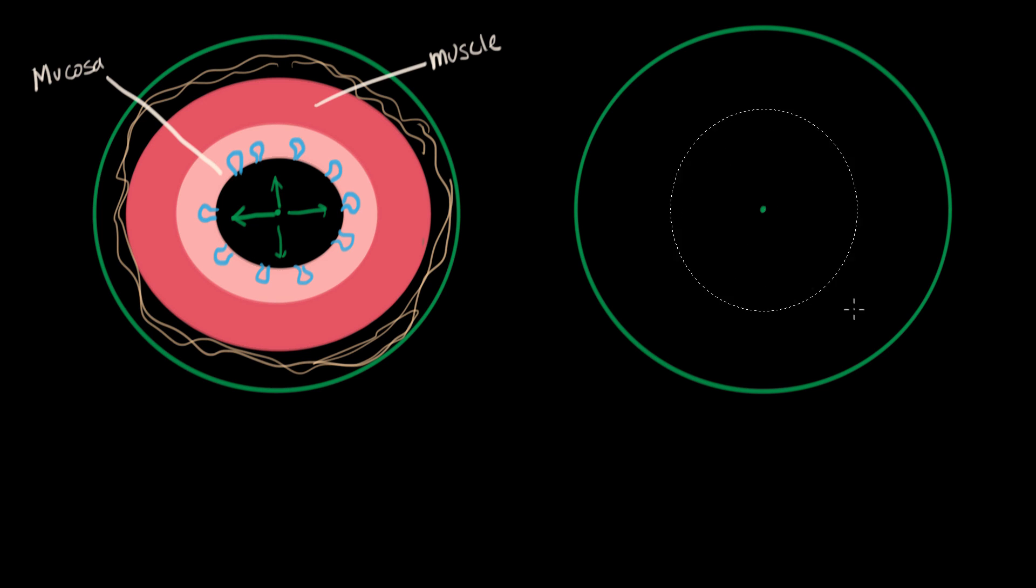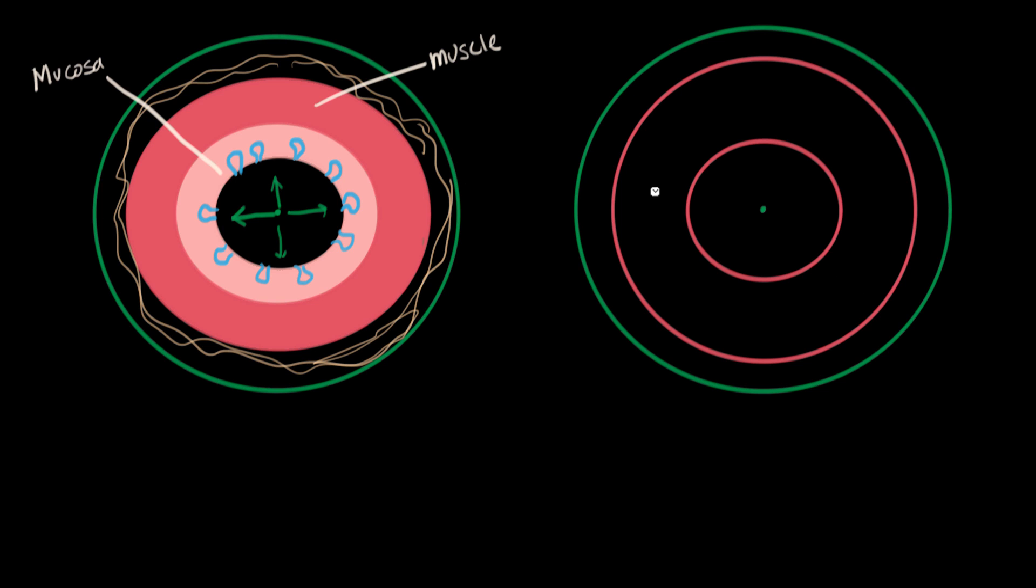So first we still have our muscular layer, but now the lung is in spasm. The muscles are spasming, which means it's constricting, and the opening is going to be much smaller. The connective tissue like the cartilage and other things are still out there. But the important thing to focus on right now is the fact that the muscular layer has thickened, and it's clamping down on this opening.